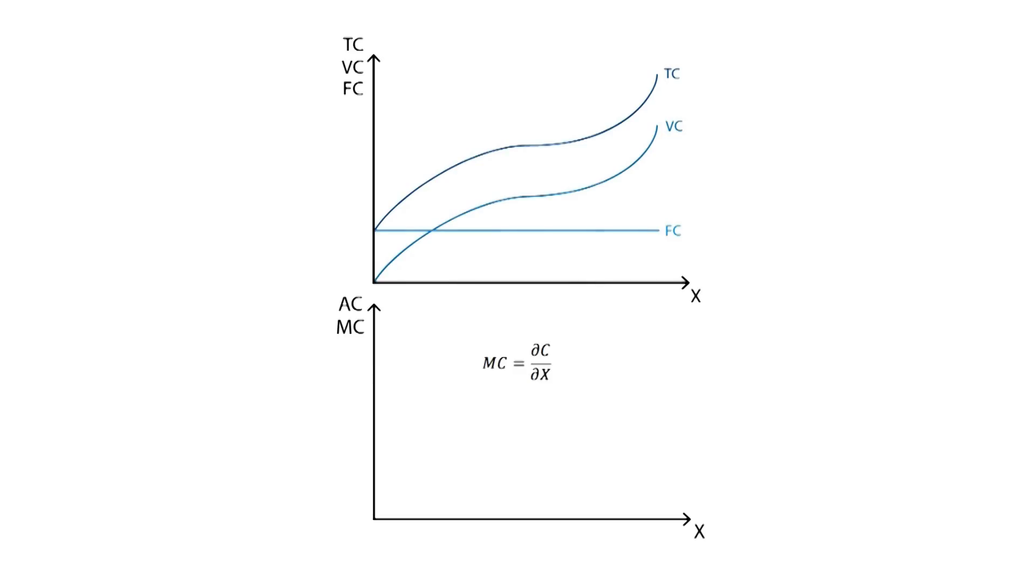While marginal cost is the marginal increase in cost c that arises as a result of an increase of one unit of output x.